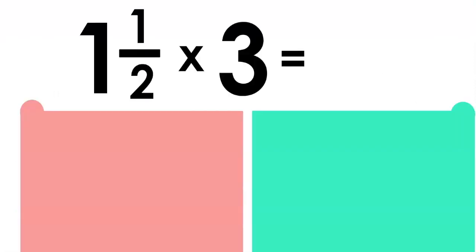Last time we looked at fractions, we looked specifically at just multiplying — for example, three quarters multiplied by a half, or two thirds multiplied by one third, things like that. And now we're going to look at mixed fractions.